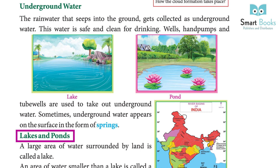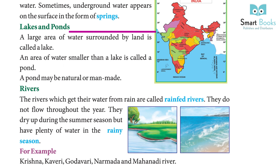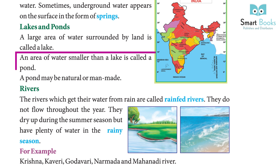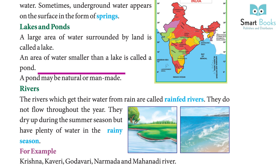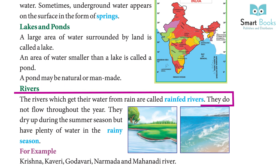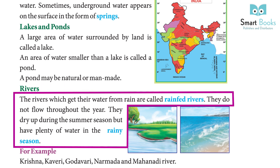Lakes and ponds: A large area of water surrounded by land is called a lake. An area of water smaller than a lake is called a pond. A pond may be natural or man-made.